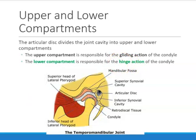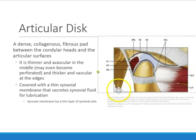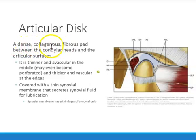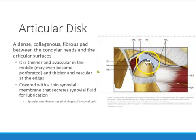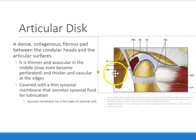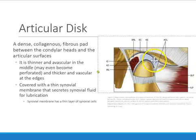The articular disc is a very thick, dense tissue made up of collagen. It is found between the condyle and the articular surfaces, between the temporal bone and the condyle. It is thin in the middle and thicker on the outer edges. It is vascular on the edges — blood supply is present there — but avascular in the middle, meaning no blood supply in the center.